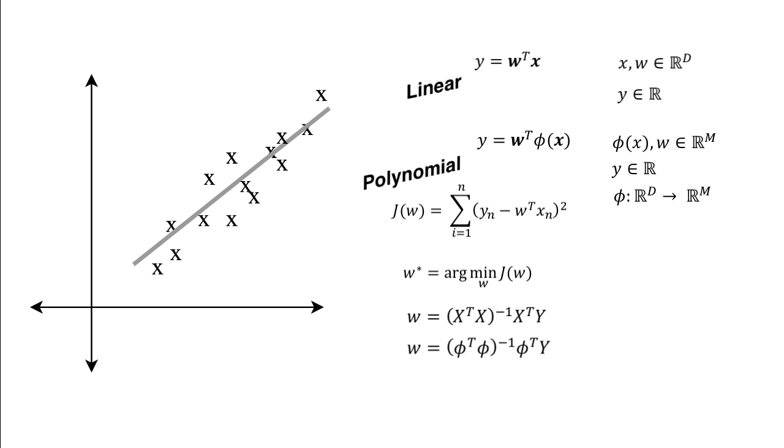Want to include regularization? Just include lambda i. Lambda is the regularization parameter, and i is the identity matrix. With L2 regularization, this is now ridge regression. The point of a parametric model is to estimate the value of parameters w, which we can do, only if we know phi.